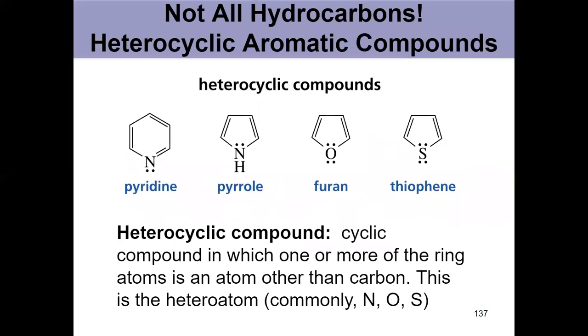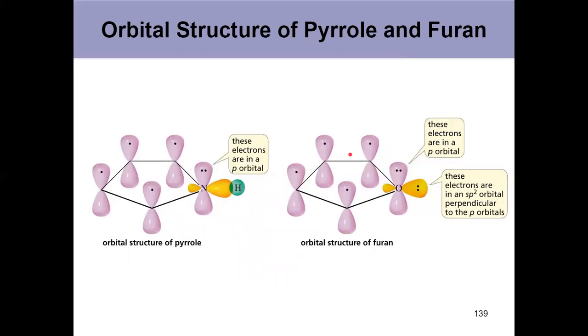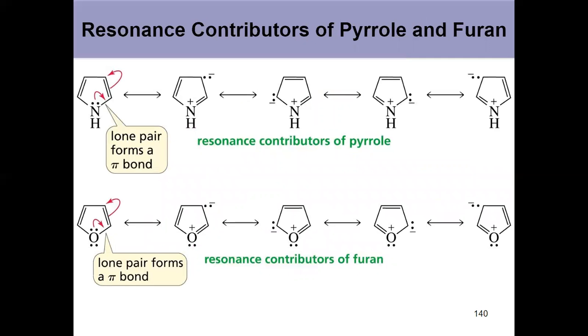So look at the structures. Jumping back some slides here. Here they're not incorporated. Here they are. One pair in these two compounds is. The other pair is not. Think about your orbitals. Form a Huckel number of electrons if you can by drawing the resonance contributors, shown here on slide 140.